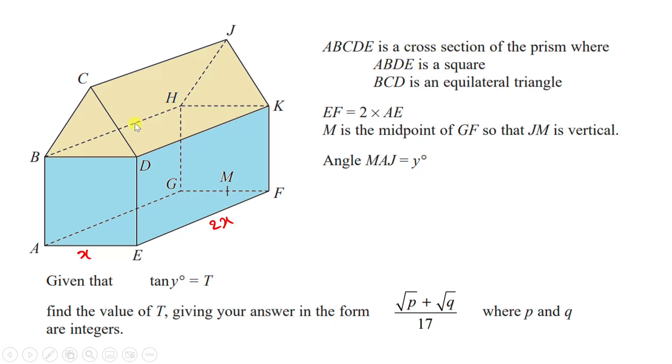Because we know ABDE is a square, that means all the lengths are the same, so X, X, X. We also know that BCD is an equilateral triangle. So you can figure that all of these angles in an equilateral triangle is 60 degrees. And that means if BDE is X, which it is, then CD and BC are also X. Because not only are the angles the same, the lengths are the same.